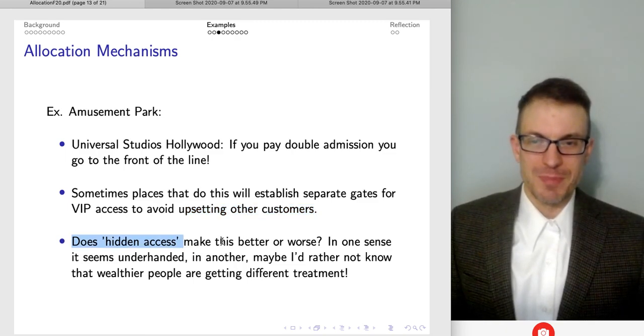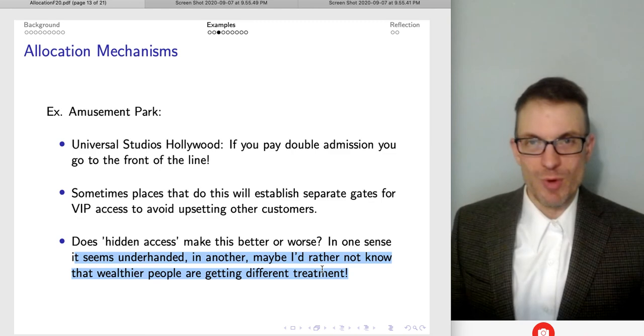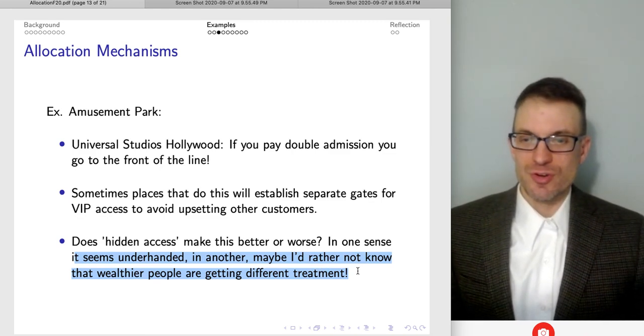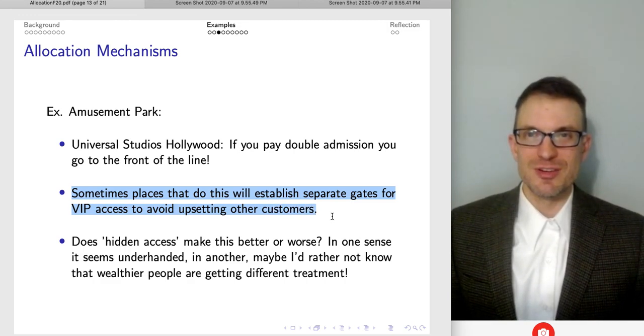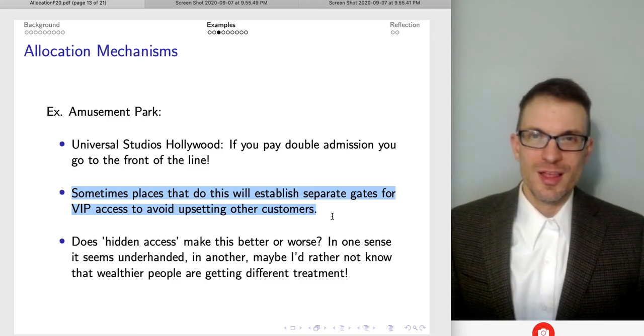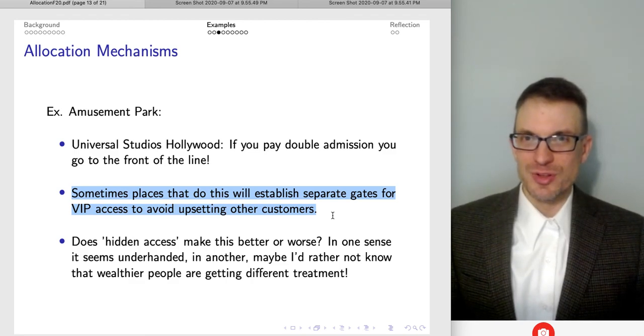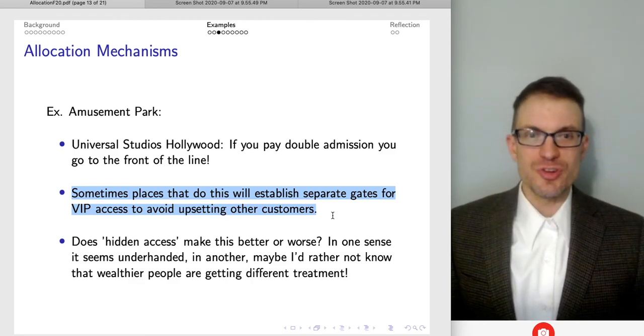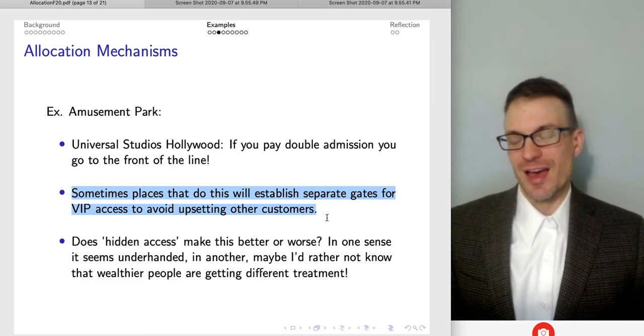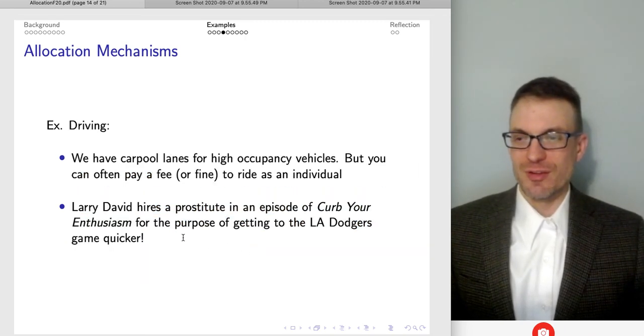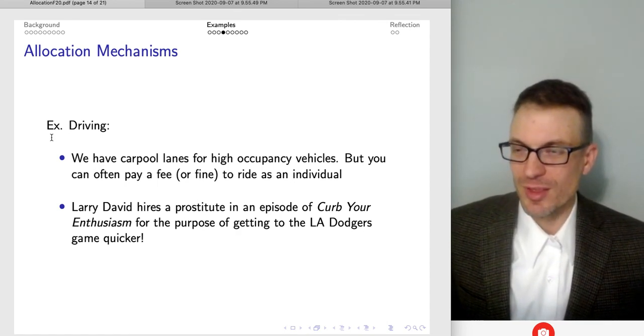So my reflection, well, does this hidden access make this better or worse? I mean, in one sense, it seems underhanded. In another, I don't know, maybe I'd rather not know that wealthier people were getting different treatment. Like, the way as I was explaining this, it seems not so good to hide the secret entrance for those paying extra. On the other hand, I don't know if I'm waiting in line for a long time, I think it's probably for my own good, conditional on them letting people in ahead of me that I don't know about it. I would rather not. Honestly, I would rather not. If I'm in a line that's taking forever, I would rather not know that it's because other people were paying to get in front of me.